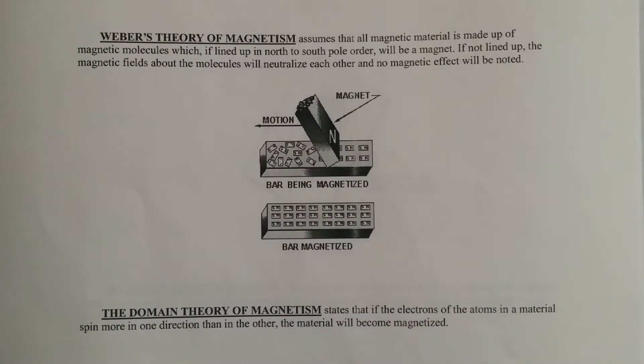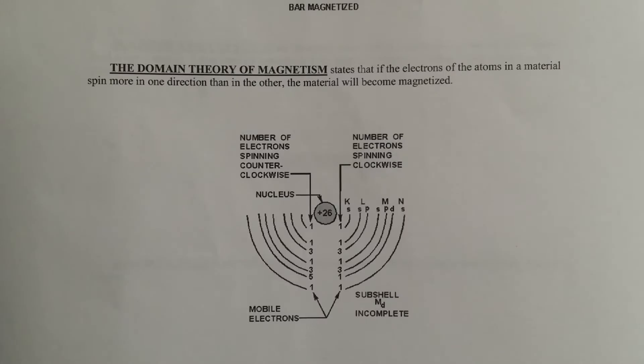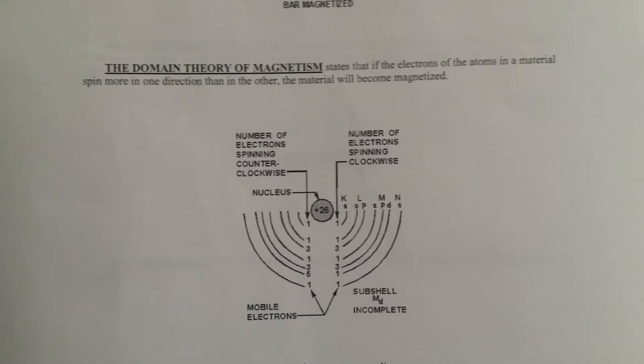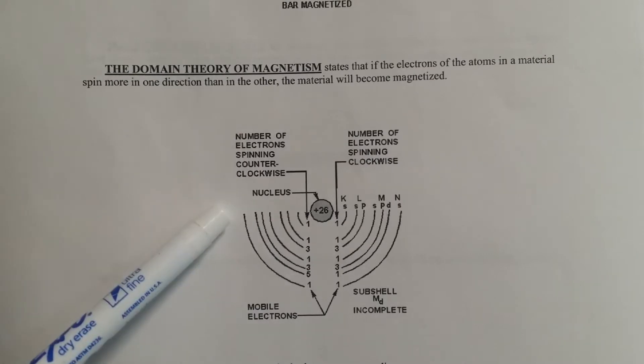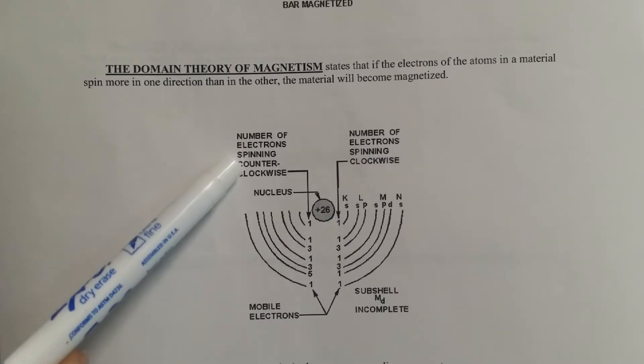But that's not the only theory. The quantum physics theory says that it is not the molecules, but the electrons, or rather the atoms that are at the center that make the metal. The atoms have electrons, and if you make all the electrons spin in the same direction, kind of like in the solar system where the planets spin in the same direction as they are traveling around the sun.